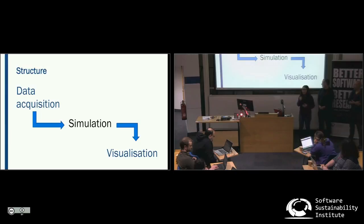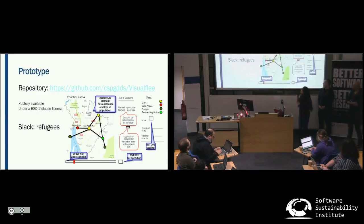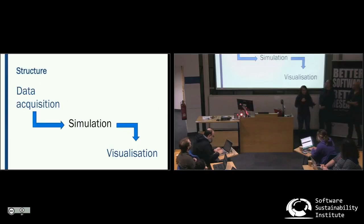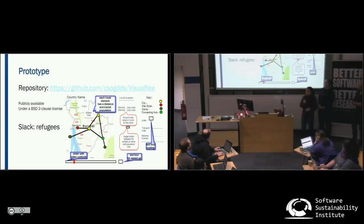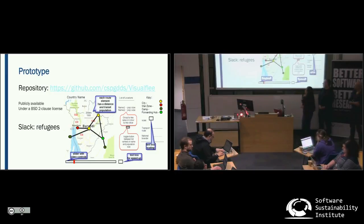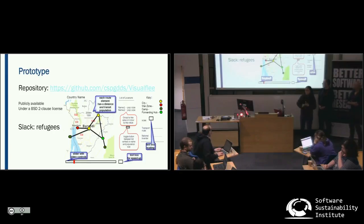Andy and Mario concentrated on data acquisition from three different sources. Thomas, along with Edward, concentrated on the visualization part. We have a repository called Visual Flee, which is publicly available under the BSD 2-clause license. We were talking with each other and sharing all related data and files on the refugees' Slack page.